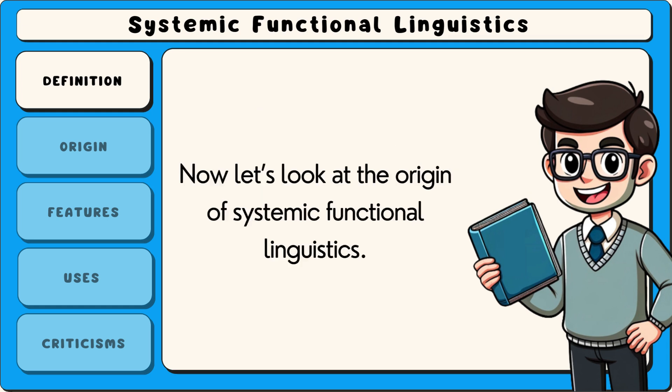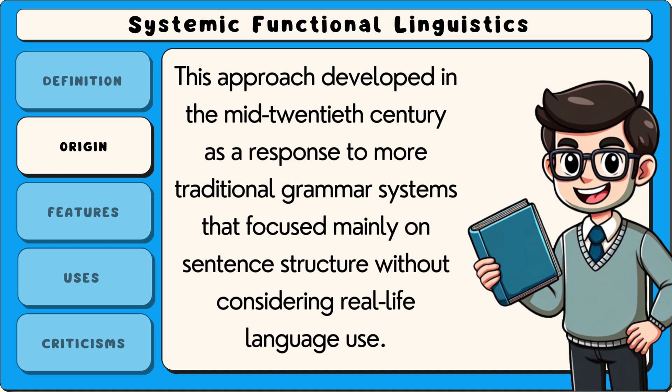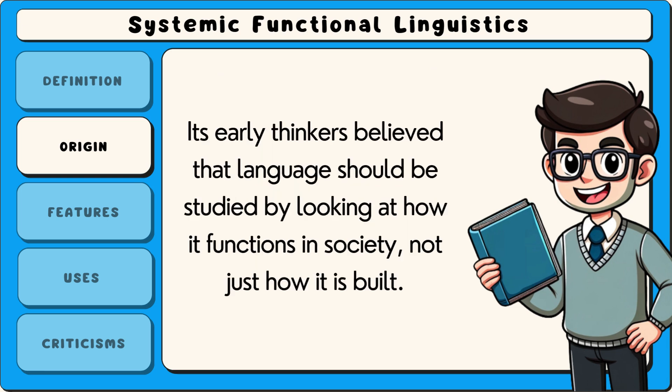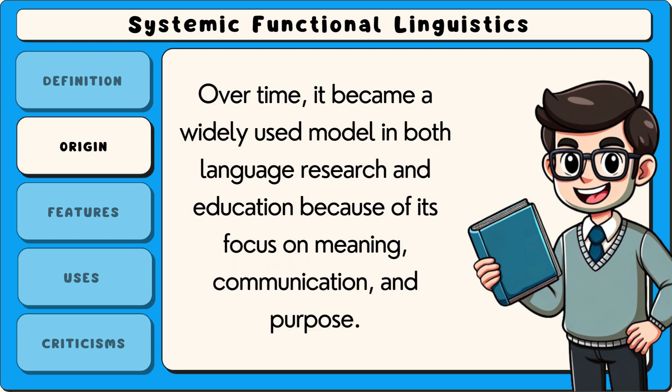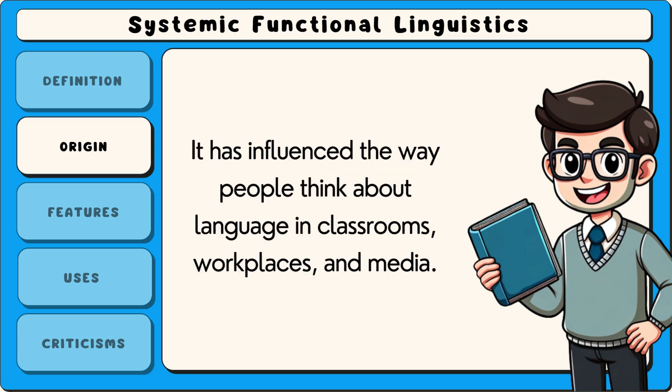Now let's look at the origin of systemic functional linguistics. This approach developed in the mid-20th century as a response to more traditional grammar systems that focused mainly on sentence structure, without considering real-life language use. Its early thinkers believed that language should be studied by looking at how it functions in society, not just how it is built. Over time it became a widely used model in both language research and education because of its focus on meaning, communication and purpose. It has influenced the way people think about language in classrooms, workplaces and media.